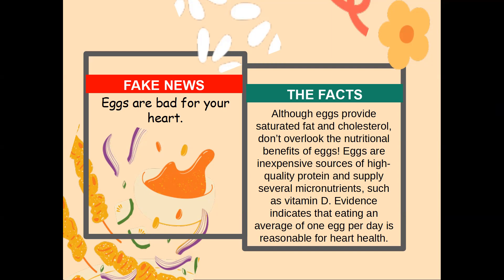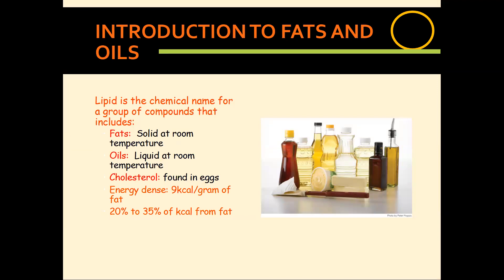We have to look at the quantity and quality of the types of fats, because fats are still very essential for good health. Lipid is the chemical name for a group of compounds we call fats and oils. Fats and oils are the most abundant lipids in nature, found in both plants and animals. A lipid is called a fat if it's solid at room temperature and an oil if it's liquid at room temperature. Lipids from animal sources are usually solids like butter and beef fat, while oils are generally plant-based.